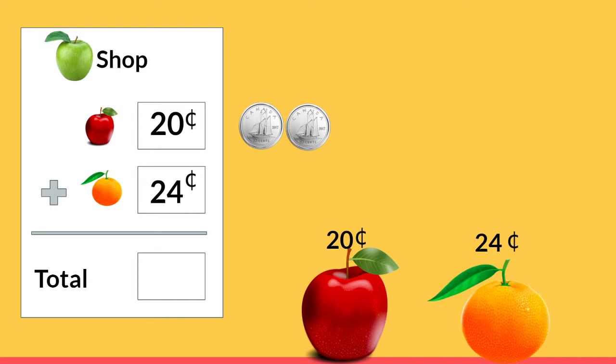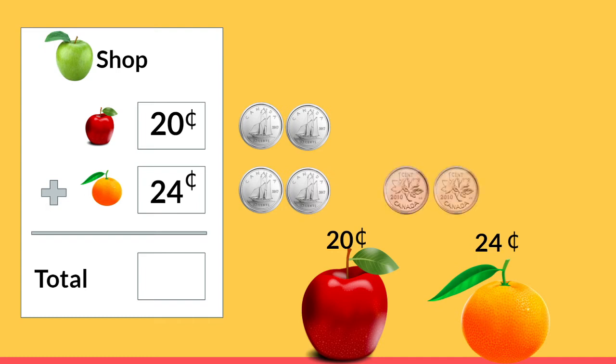If we were going to pay with dimes and pennies, this is what 24 cents would look like: 10, 20, 21, 22, 23, and 24. Now for us to find the total — or how much we would need to give the cashier to buy the apple and the orange — we add all of this money together.